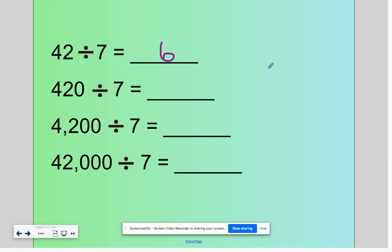Well, 420 divided by 7 is 60. Then we have 600, and our final answer is 6000.